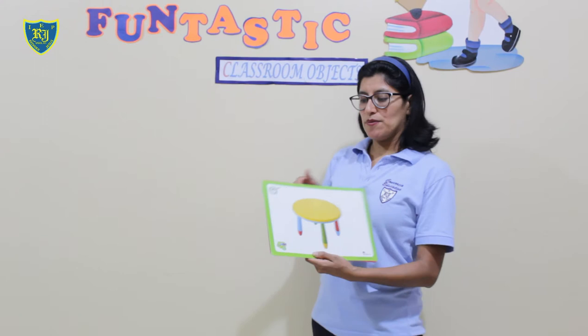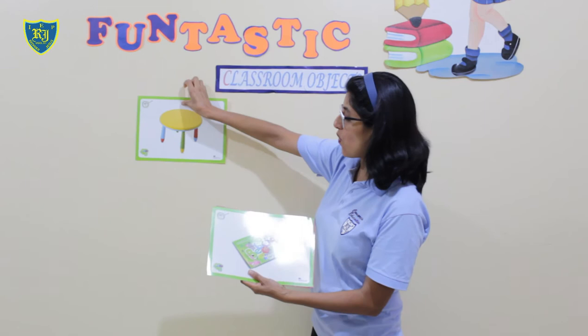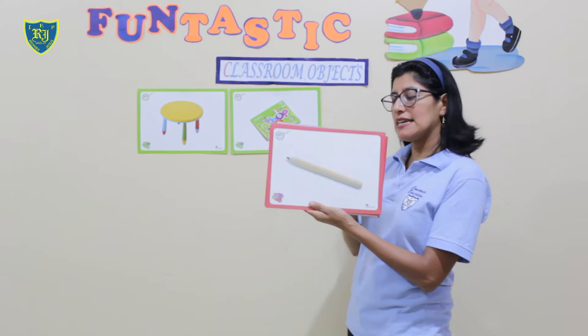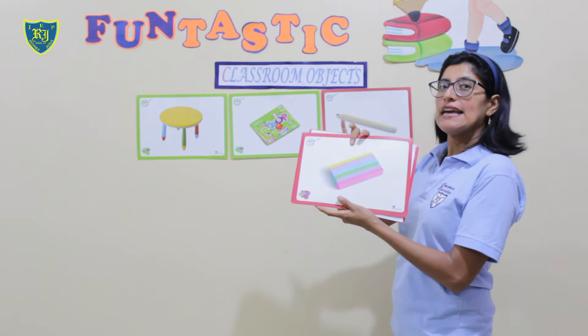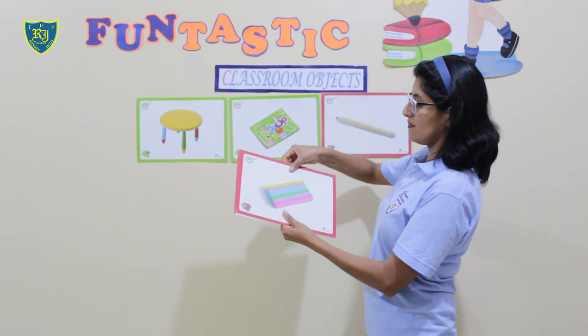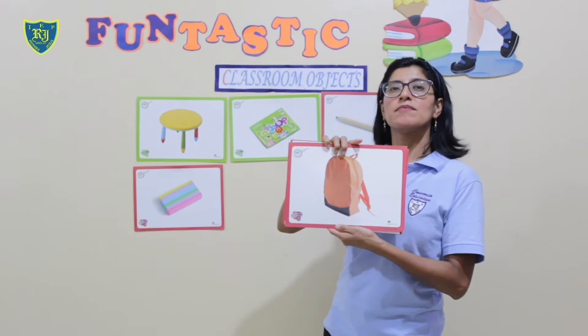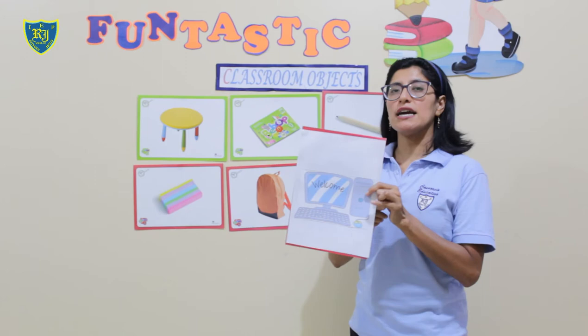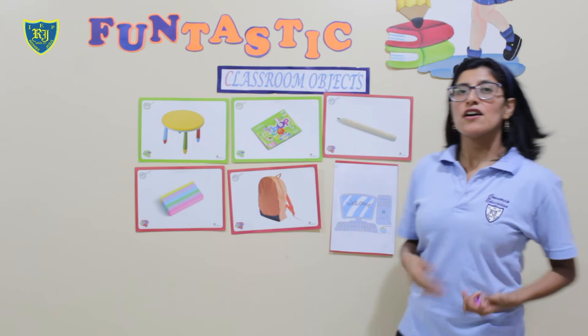Okay, let's continue. What's this? Table. Book. Pencil. Eraser. Bag. Computer. Good job.